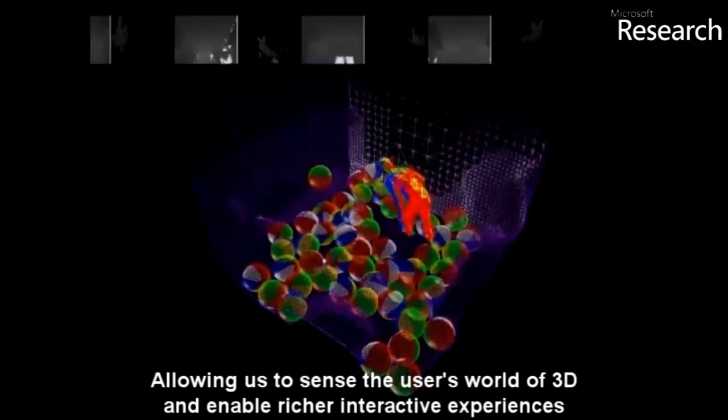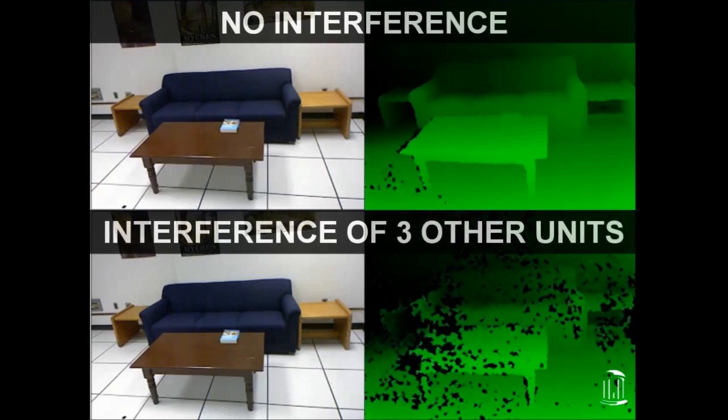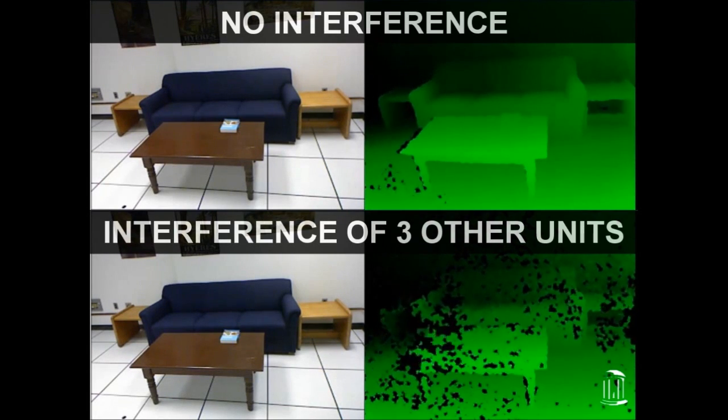Since camera and structured light projector move together, each camera will see its own pattern sharply, while the induced motion blurs the patterns of other cameras.